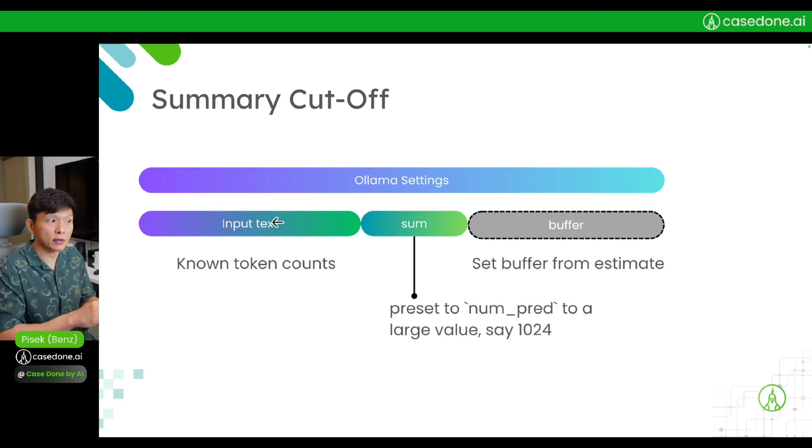For the summary length, you can set it to a desirable number. Let's say you preset num_pred to 1000 tokens. By knowing this, you can come up with a good number for a buffer - let's say a buffer is plus 50% or twice this value.